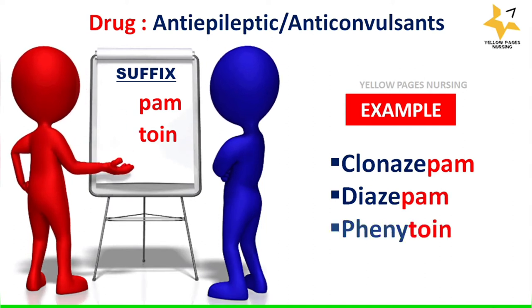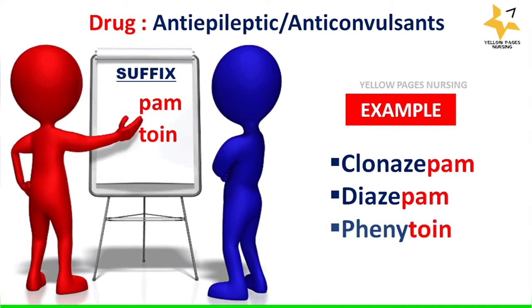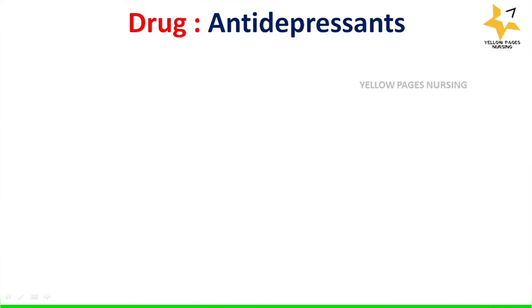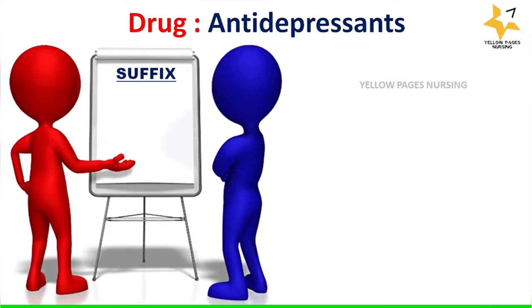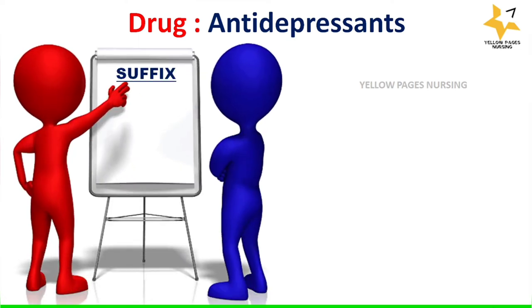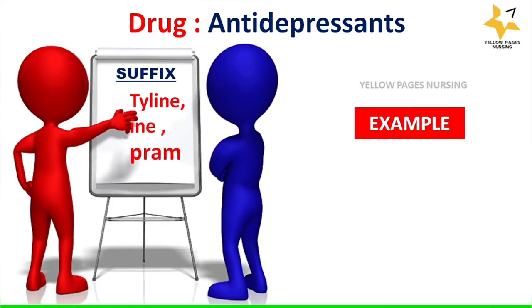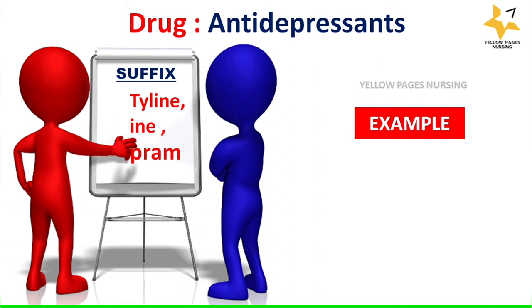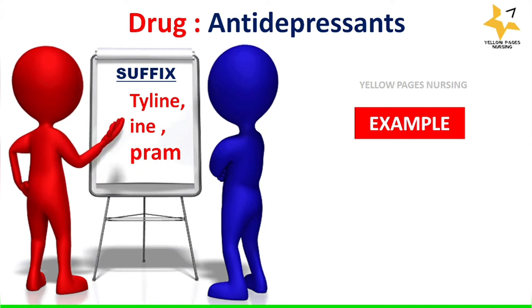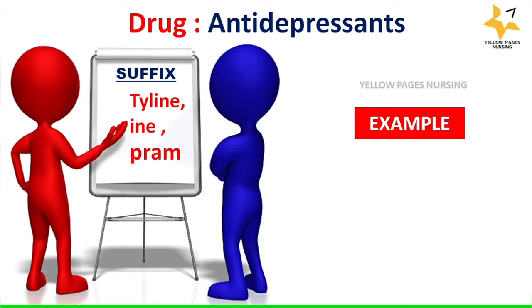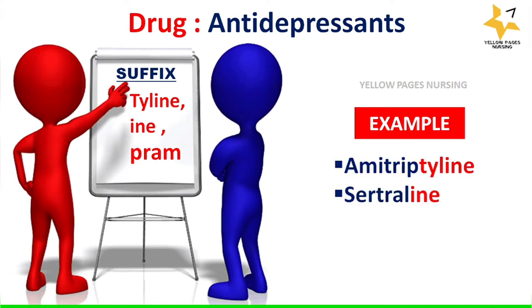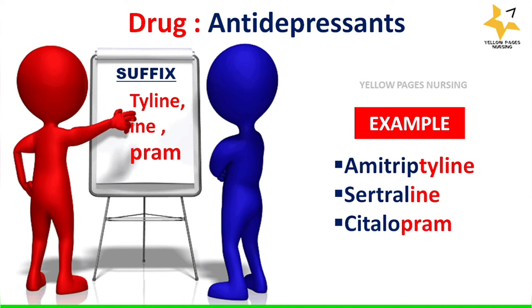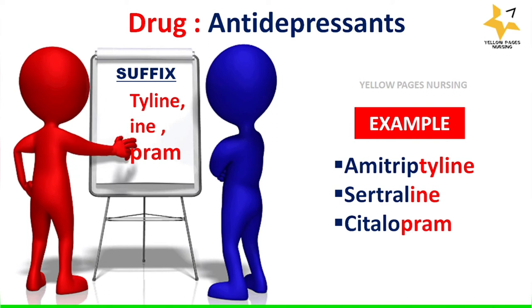Next come antidepressants, which may end with the suffixes '-tyline', '-ine', or '-pram'. Examples are amitriptyline, sertraline, citalopram, etc.